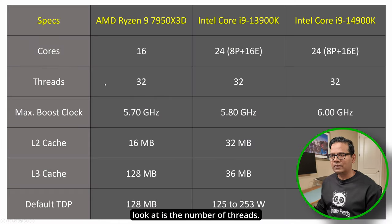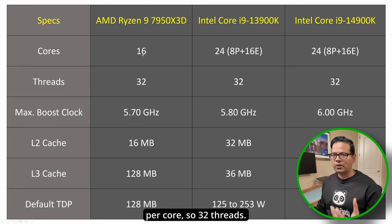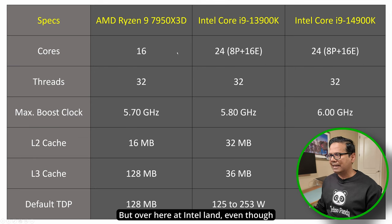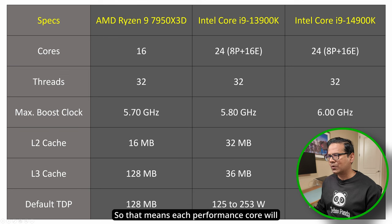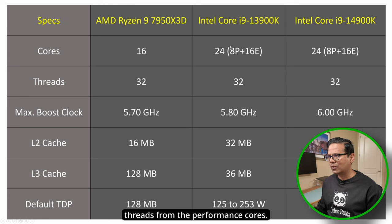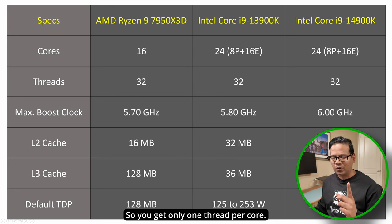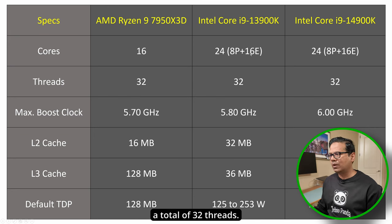The second thing to look at is thread count. Each AMD core supports hyper-threading, so you get two threads per core — 32 threads total. Over in Intel land, even though you have 24 cores, the total number of threads is still 32. The Intel performance cores support hyper-threading, giving 16 threads from 8 cores. But the efficiency cores do not support hyper-threading, so you get one thread per core — another 16 threads — for a total of 32 threads.